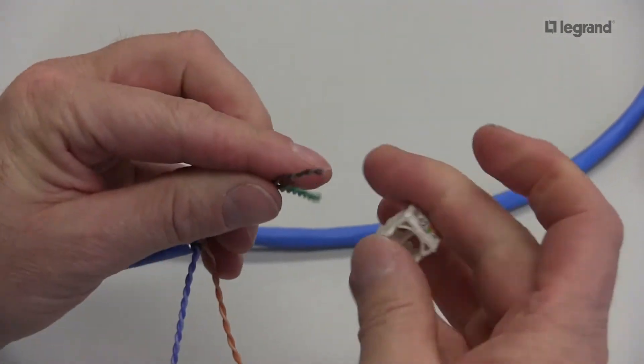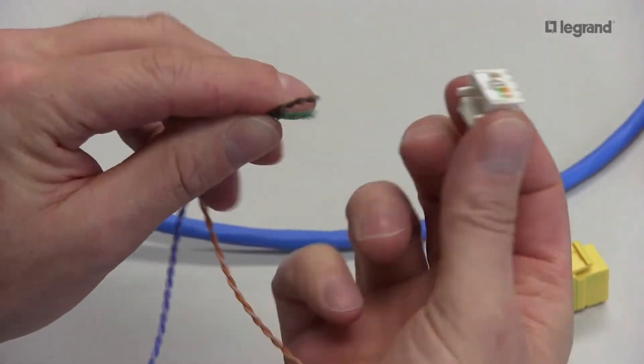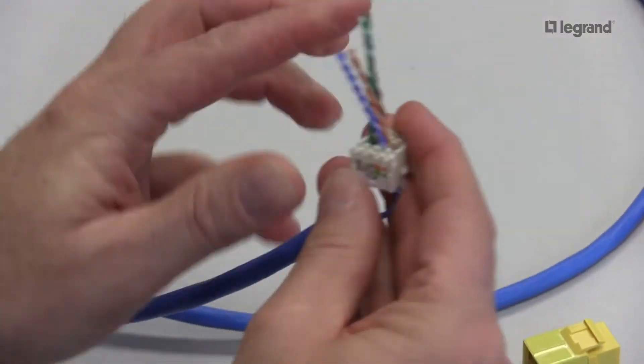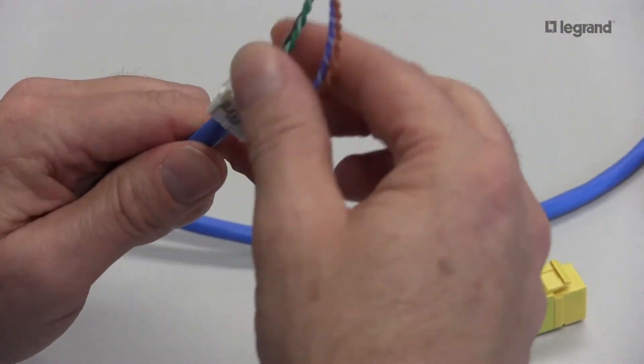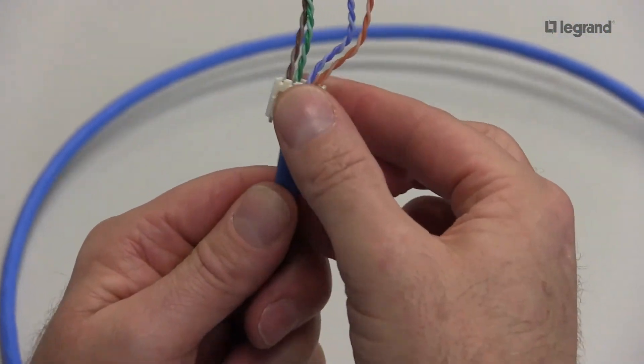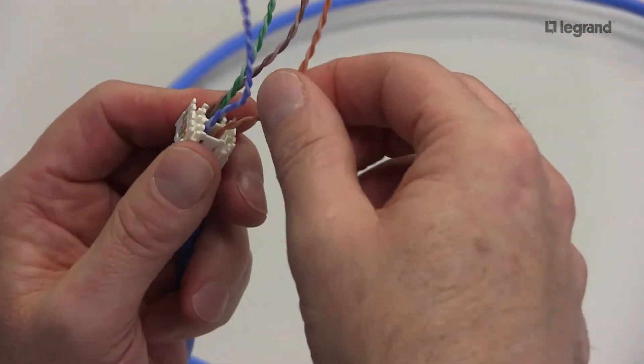So, splitting my pairs. Brown and green on one half, blue and orange on the other half for a B. Now, one note, make sure you bring your lacing cap tight to the jacket. That's going to help you when you split your pairs off to keep them inside the grooves.